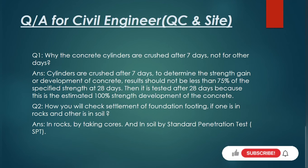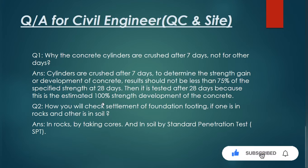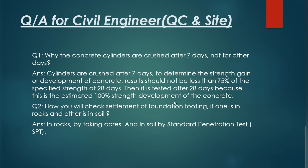The strength of concrete at seven days should not be less than 75 percent of the strength after 28 days. It is also tested after 28 days because this is the estimated 100 percent strength development of the concrete. So the compressive strength of concrete after seven days will be 75 percent of the strength that we get after 28 days.